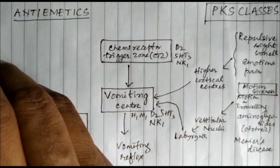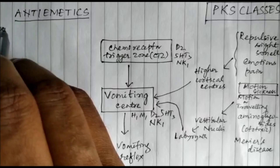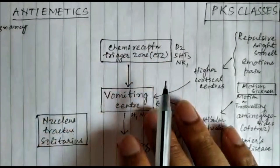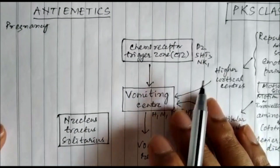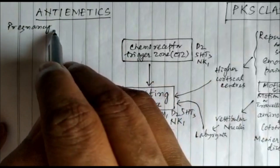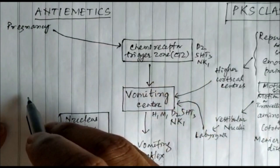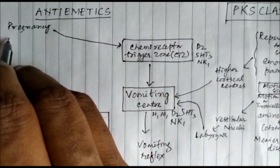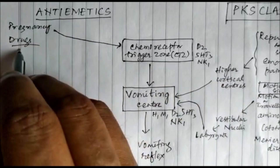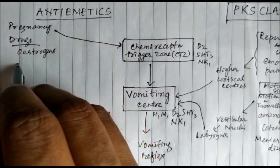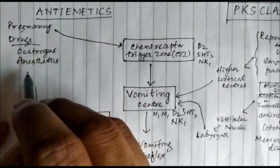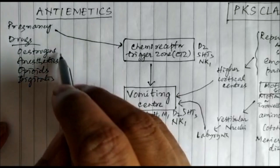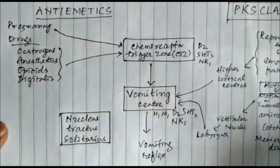Another stimulus is pregnancy. During pregnancy, mainly during the first trimester, there are stimuli which activate the chemoreceptor trigger zone and then stimulate the vomiting center. Several drugs also activate the CTZ, including estrogens, anesthetics, opioids, and digitalis.